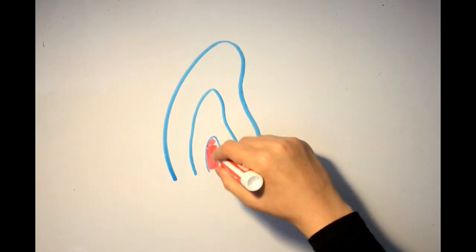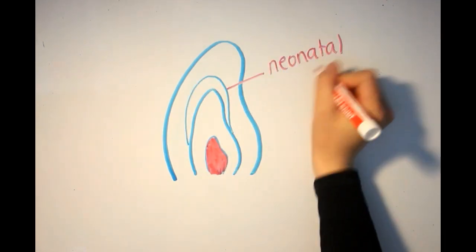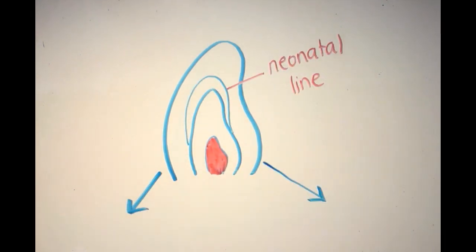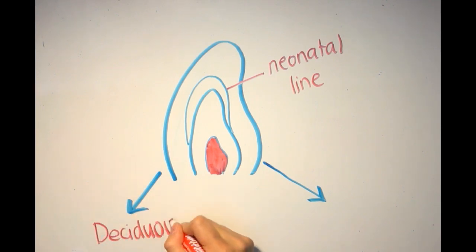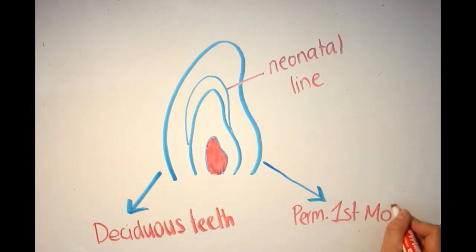Another feature is the neonatal line. It represents the border between the enamel formed before and after birth. It could also be formed due to a sudden change in the environment after birth, which causes a metabolic disturbance in the ameloblasts. It can be seen in all primary teeth and the permanent first molars.